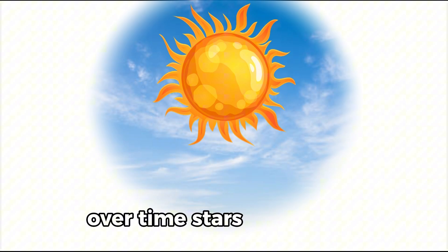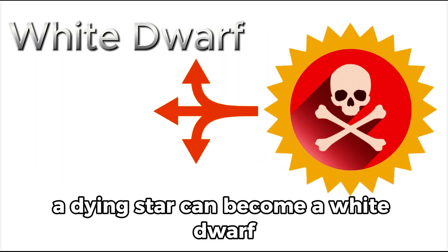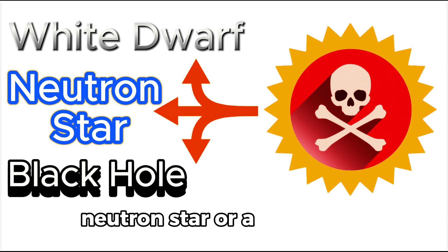Over time, stars grow older, burn all their fuel, and end their lives in different ways. A star's death depends on its mass. A dying star can become a white dwarf, neutron star, or a black hole.